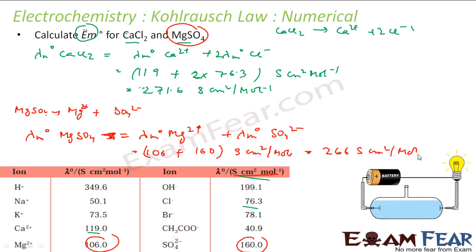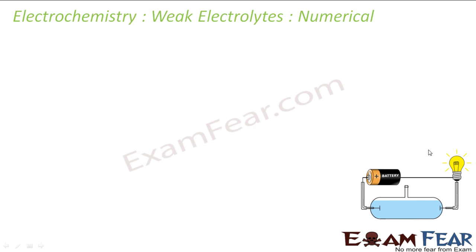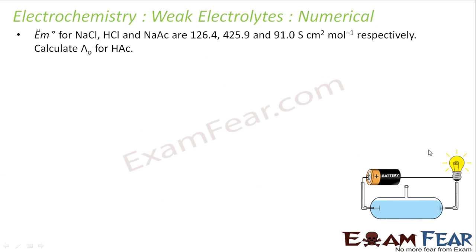Solving this you get 266 Siemens cm² per mol. The next question: λM⁰ for NaCl, HCl, and NaAc are given, and we have to find λM⁰ of HAc (acetic acid).